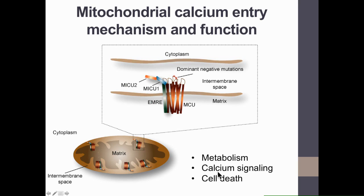Mitochondrial calcium entry was studied for decades in cellular models. However, the molecular identity of the proteins that mediate mitochondrial calcium entry was discovered just a few years ago. Now we know that the mitochondrial calcium uniporter complex is composed of a pore-forming subunit named MCU, and by different regulatory subunits, the most important of which are MICU1 and MICU2.